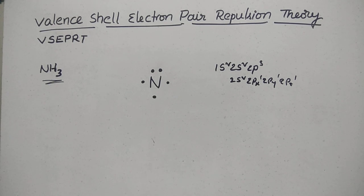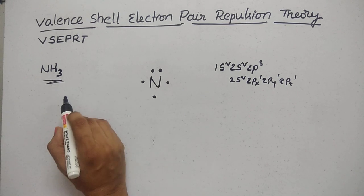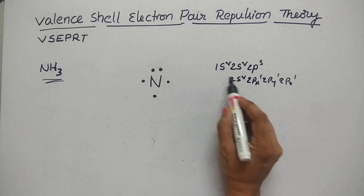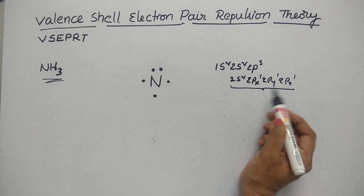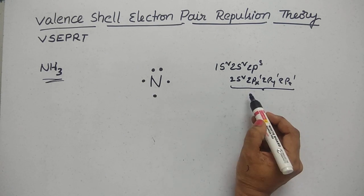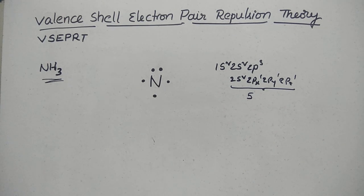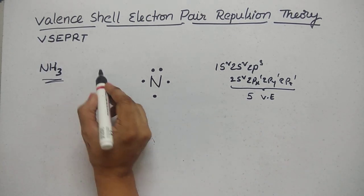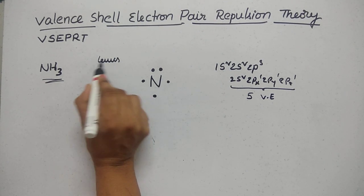Let's start with nitrogen and hydrogen. Nitrogen has atomic number 7, with electronic configuration 1s2, 2s2, 2p3, so the outermost configuration gives 5 valence electrons. This is the Lewis dot structure of nitrogen.